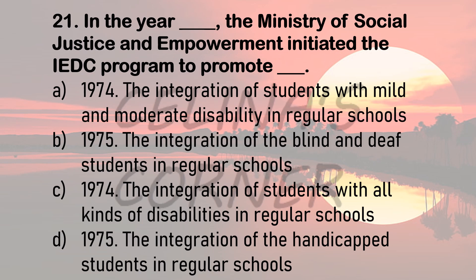Now we will be talking about the third policy, IEDC. Question 21. In the year dash, the Ministry of Social Justice and Empowerment initiated the IEDC program to promote dash. Option A: 1974, the integration of students with mild and moderate disability in regular schools. Option B: 1975, the integration of blind and deaf students in regular schools. Option C: 1974, the integration of students with all kinds of disabilities in regular schools. Option D: 1975, the integration of handicapped students in regular schools. The correct answer is option A — in the year 1974, the Ministry of Social Justice and Empowerment initiated the IEDC program. IEDC stands for Integrated Education for Disabled Children, ensuring integration of mild and moderate disabled children in regular schools.